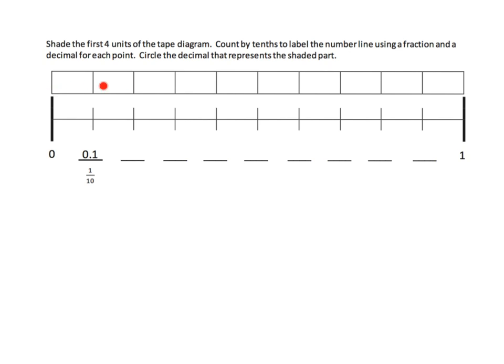What we've got here is this tape diagram broken up into ten pieces: one, two, three, four, five, six, seven, eight, nine, ten. We're going to count by tenths and label each of these pieces using both a fraction and a decimal.